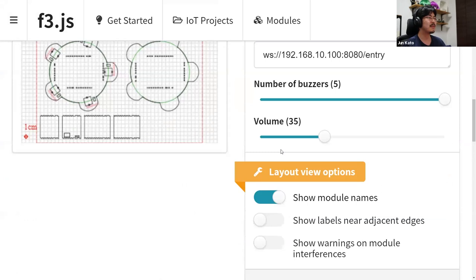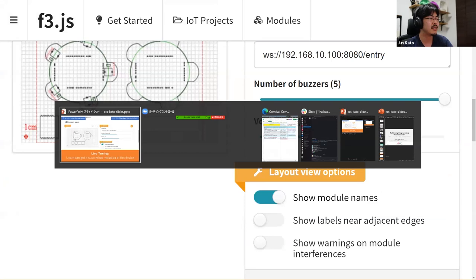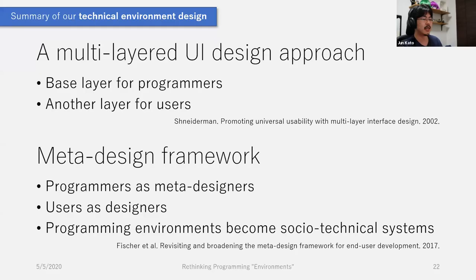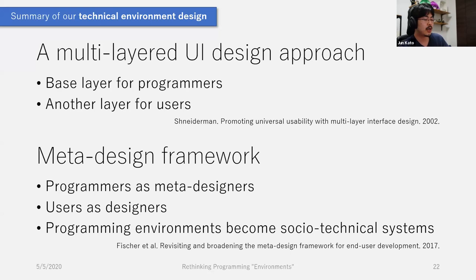This interaction design is named 'user-generated variables.' Here, a variable is actually serving as a communication medium between a programmer and a user. As a summary of our technical environment design, we took a multi-layered user interface design approach. The multi-layered UI was first explained by Ben Shneiderman in 2002 for improved usability of applications, and here we applied it to environment design, separating the base layer for programmers from another layer for users. This can also be thought of as an example of the meta-design framework: programmers are meta-designers who define the degree of freedom to customize program behaviors, and users are designers who customize the programs to fit their needs. As a result, programming environments become socio-technical systems with which diverse kinds of people can collaborate to improve program definitions.